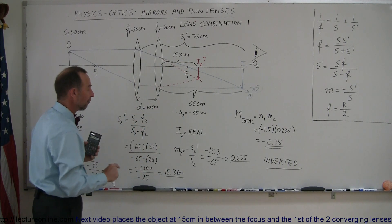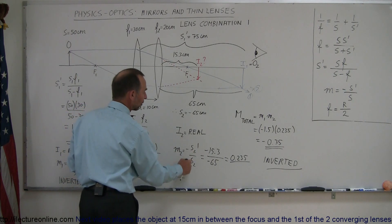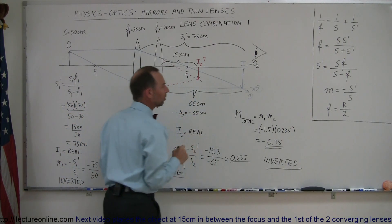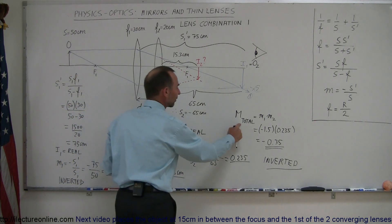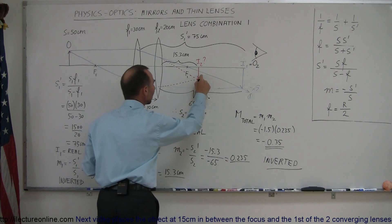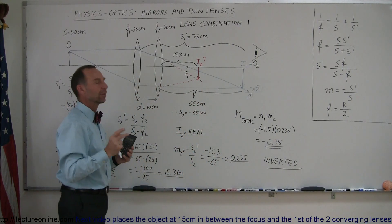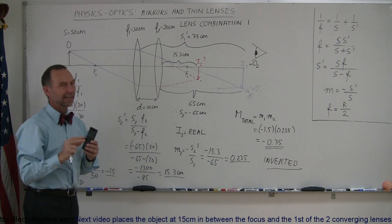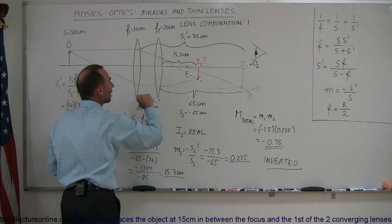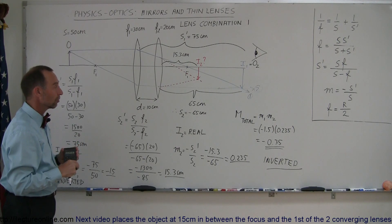Since the image distance is positive, image 2 is real. You find the magnification by taking the negative image distance divided by the object distance, getting a positive value, meaning the second image has the same orientation as object 2, which was itself the first image. To find total magnification, multiply the two individual magnifications together, giving a negative value — meaning the final image is inverted relative to the original object, and about one-third its size. The equations give you the real values since it's difficult to precisely trace ray directions through the second lens by eye.